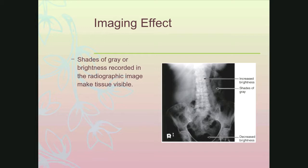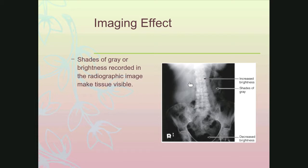The shades of gray or the brightness recorded in the radiographic image is what makes your tissue visible. Because you have absorption in the spine where it's photoelectrically absorbed, it's brighter — there's an increase in brightness. Where you have soft tissue of the abdomen — the organs, small and large intestines, the liver, the spleen — where you don't have as dense an object, you tend to have more shades of gray. It's the difference between the brightnesses and the shades of gray that gives you your contrast and allows things to become visible. We can see air in the intestines because it stands out from the rest of the tissue around it.